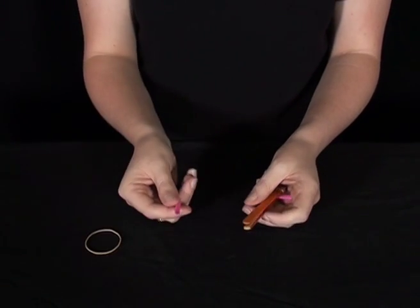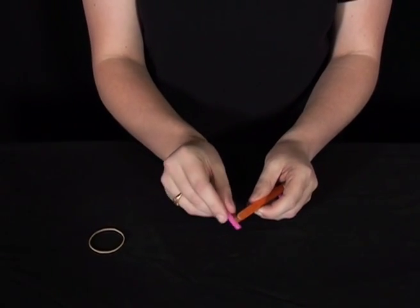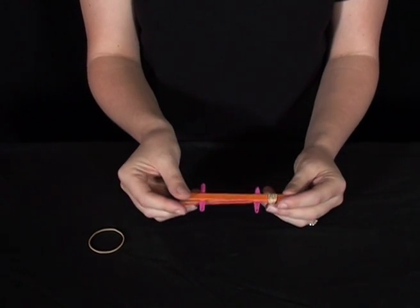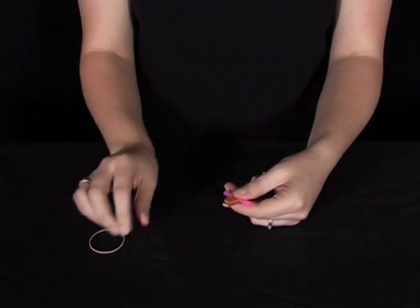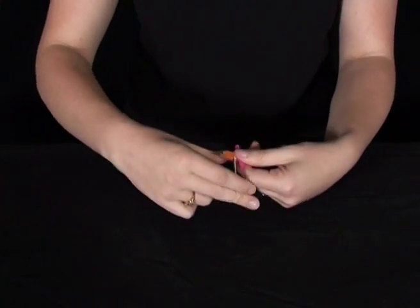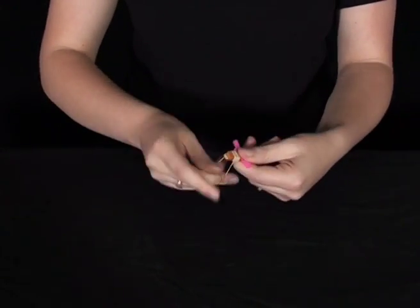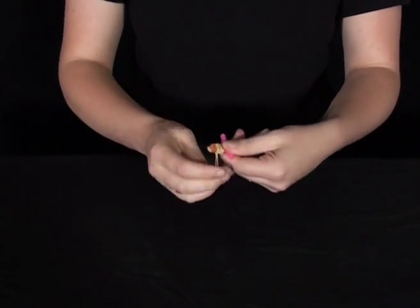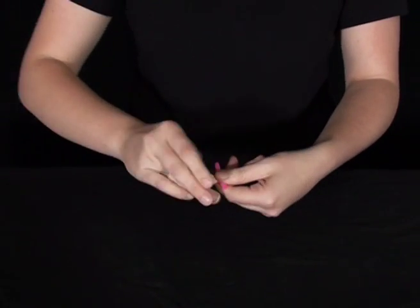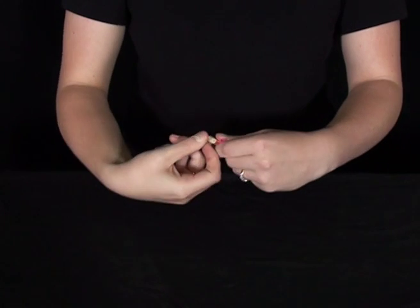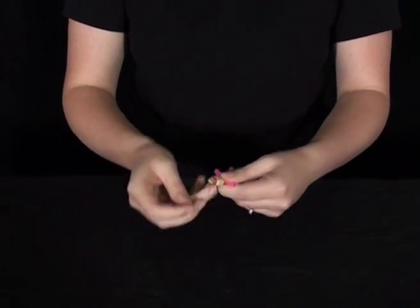Now take your other piece of straw and place it between the two pop sticks about the same distance from the end as the other one. And tie it together tightly with the other thin rubber band. Excellent. One more. There we go.